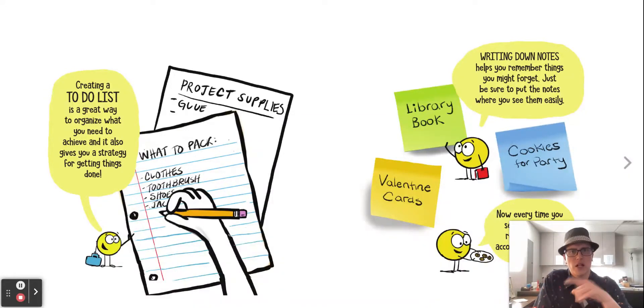I do it electronically on my computer. This computer right here that I'm talking to. Yeah, it's in there. And I set alarms and stuff. Writing down notes helps you remember things that you might forget. Just be sure to put the notes where you're going to see them easily and remember to do them.